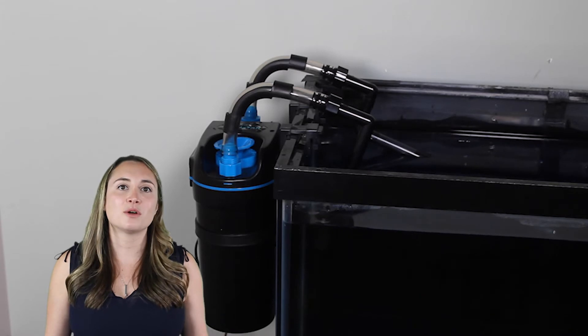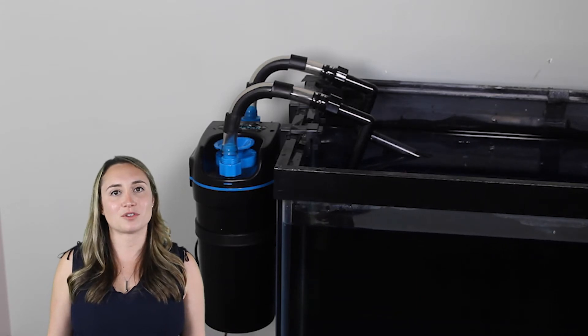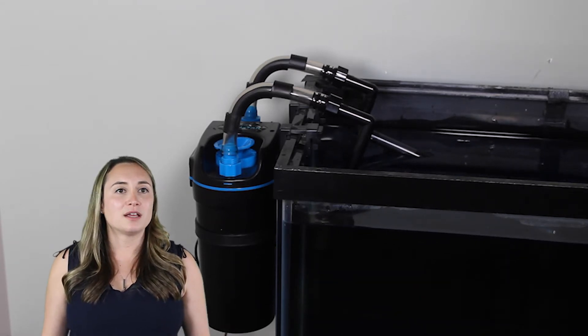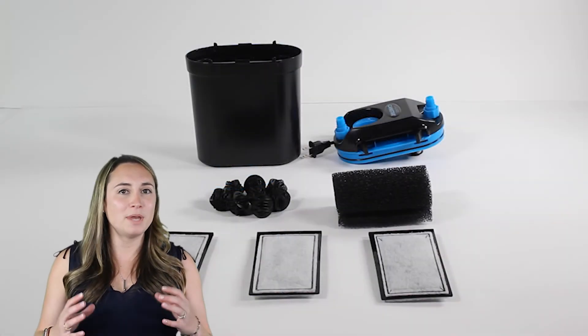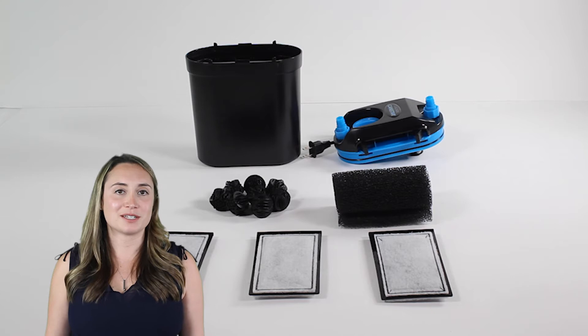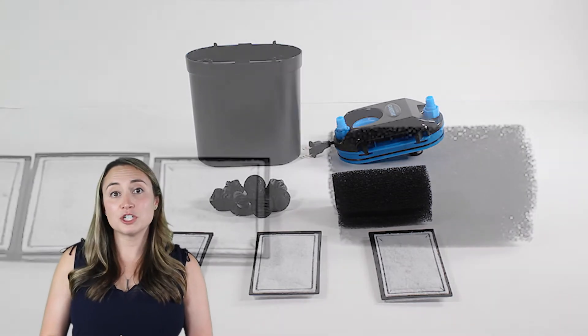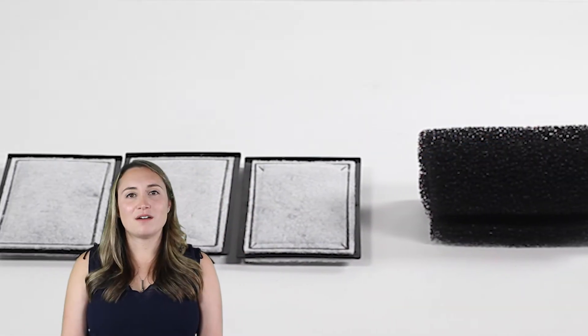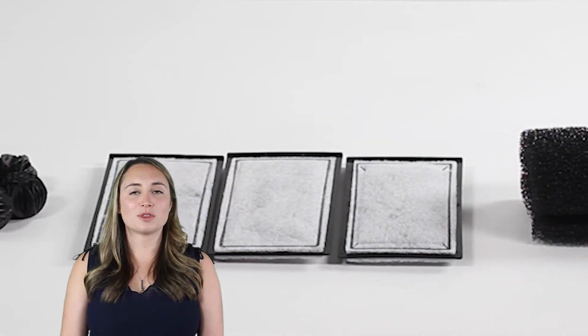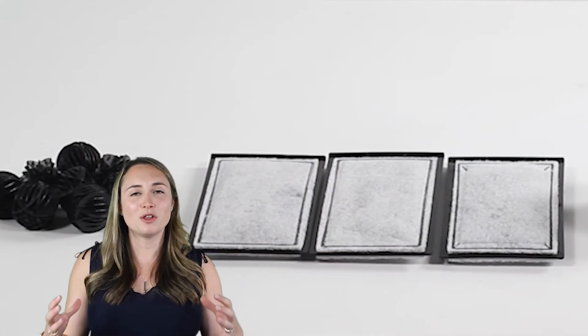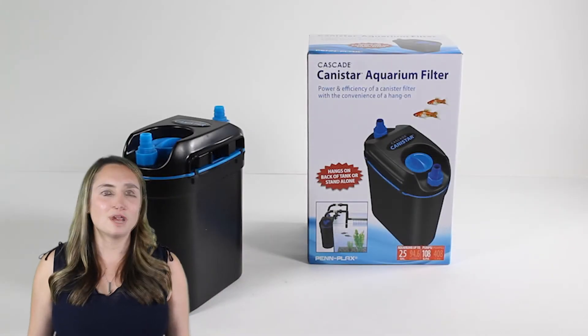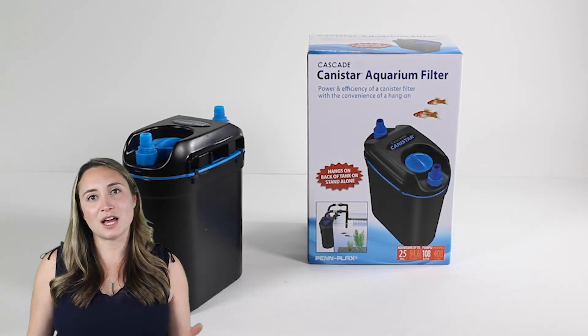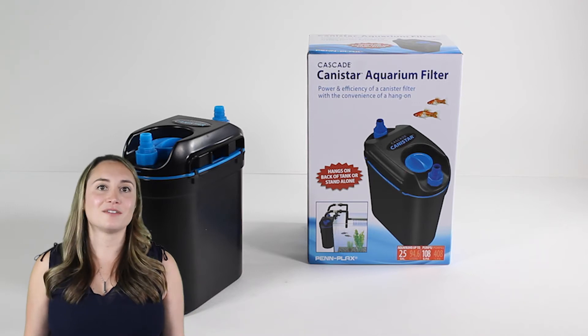You've got chemical, mechanical, and biological. You've got one big sponge which is going to catch the biggest of the debris. Three replaceable filter cartridges. Lastly, we have biomass. So with all this filtration in this small little box you are getting every benefit of a canister filter for the convenience and the size and the price of a hang-on filter.